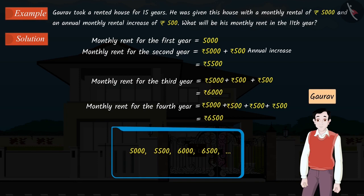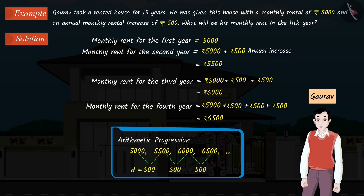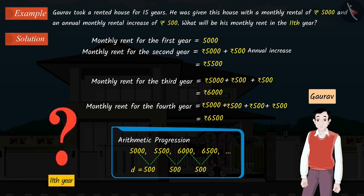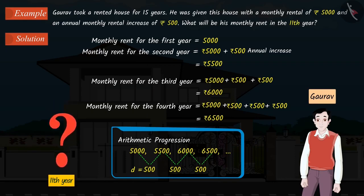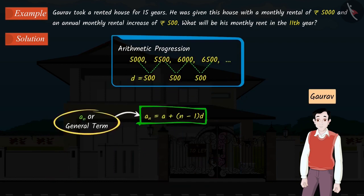If we observe carefully, we can see a pattern here. This is an AP. We have to find the monthly rent for the 11th year. To find the value for the 11th year, we will use the formula for the nth term, A_n, the general term of an AP.